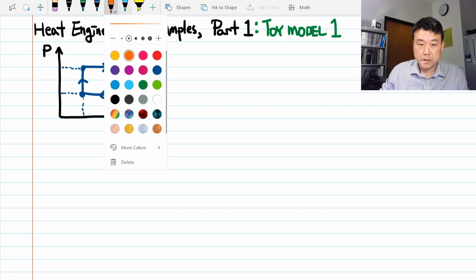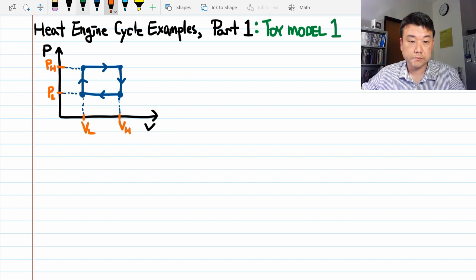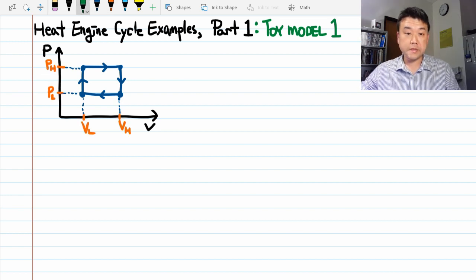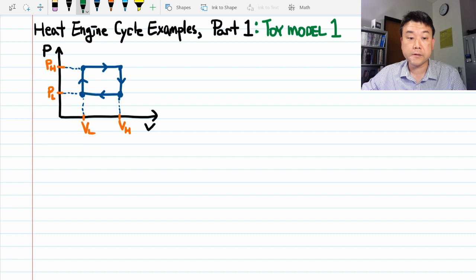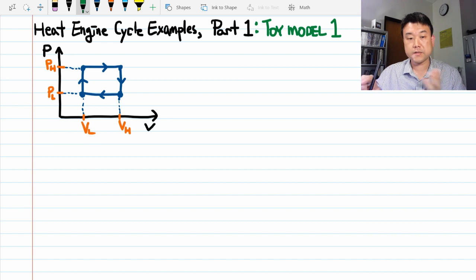Let me give labels for these different pressure and volume points. So this is a pretty simple cycle that makes calculations easy. All these processes are isochoric, isobaric, isochoric, isobaric processes that makes calculation of work done fairly simple.